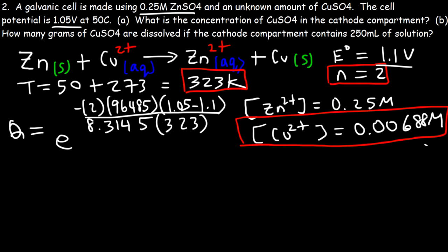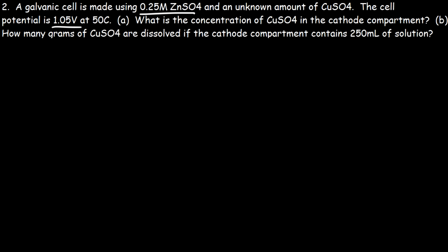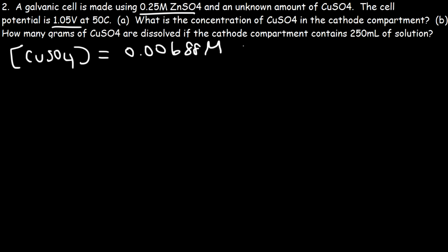Notice that the amount of product (zinc) is significantly greater than the amount of reactant (copper). We have a relatively high amount of product and a relatively low amount of reactant, which is why E is less than E°. Whenever the non-standard cell potential is less than the standard cell potential, it means you have a relatively low amount of reactant or a relatively high amount of product. Now let's focus on part B.